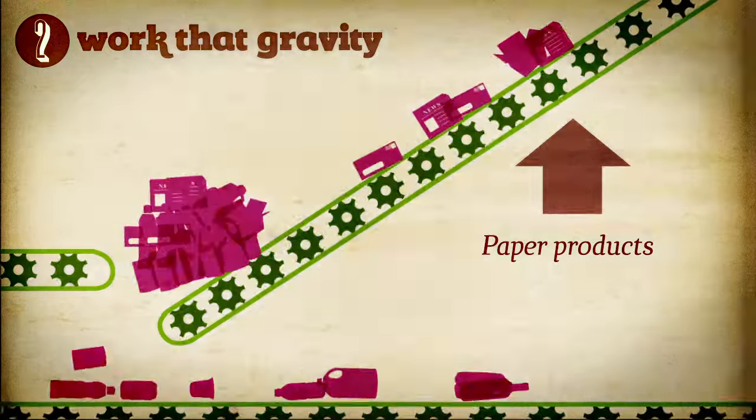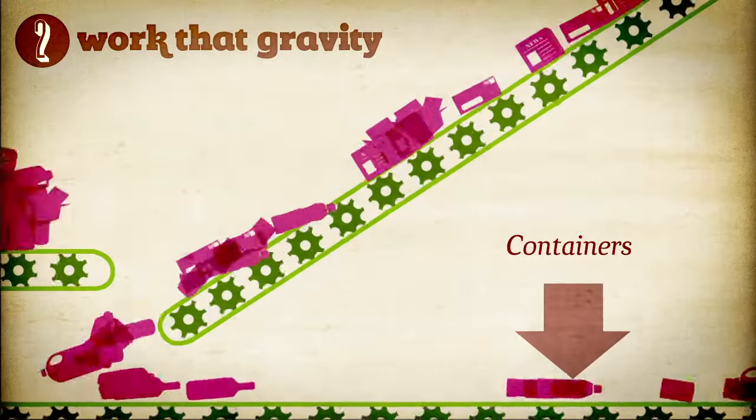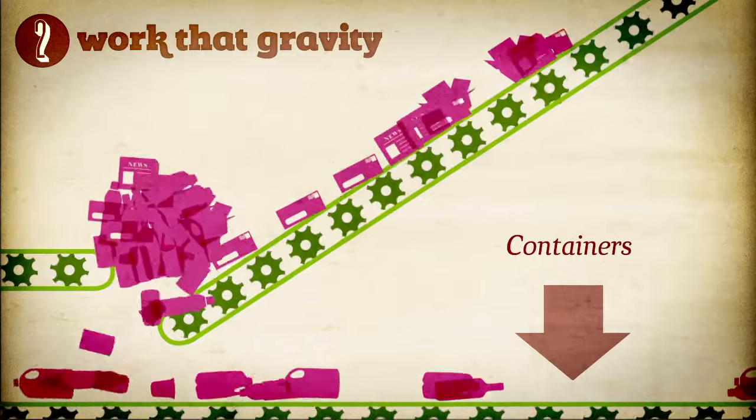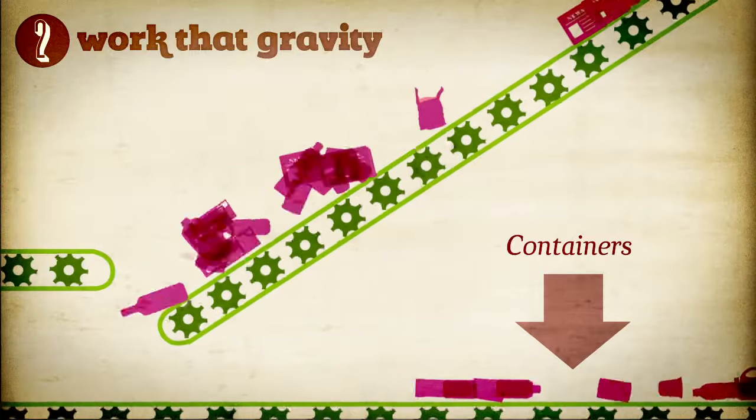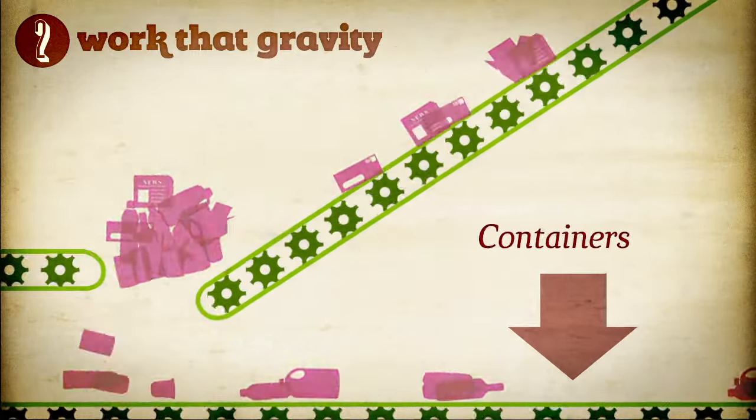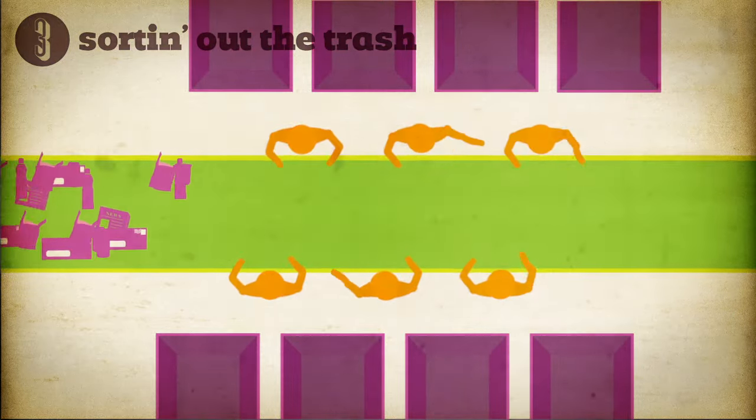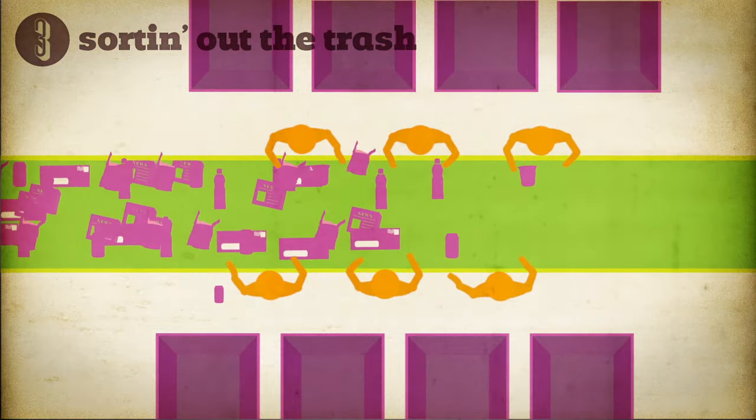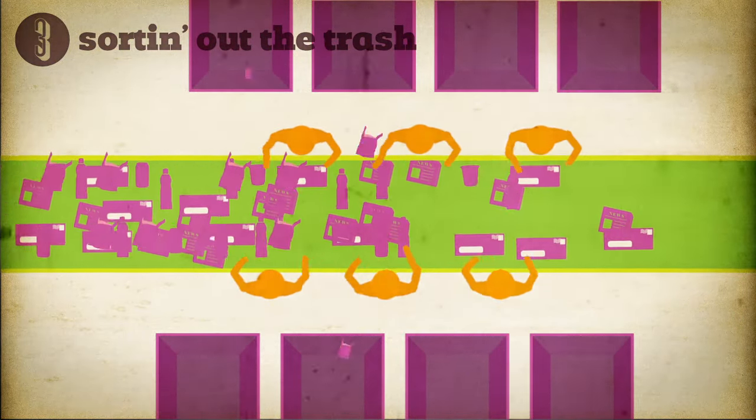While the paper products travel up, containers fall back and through the screen onto a new conveyor that takes them to their next step in the sorting process. This process isn't foolproof. Workers sort out trash and misdirected recyclables by hand.